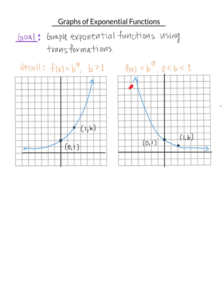Here is the graph of f(x) = b^x where b is between 0 and 1. Again, key points are (0, 1) always, and then (1, b) where b is the base. Since b is between 0 and 1, your value of b is going to be a fraction, like maybe 1/2, 1/3, 2/3, and so on, but it has to be less than 1.